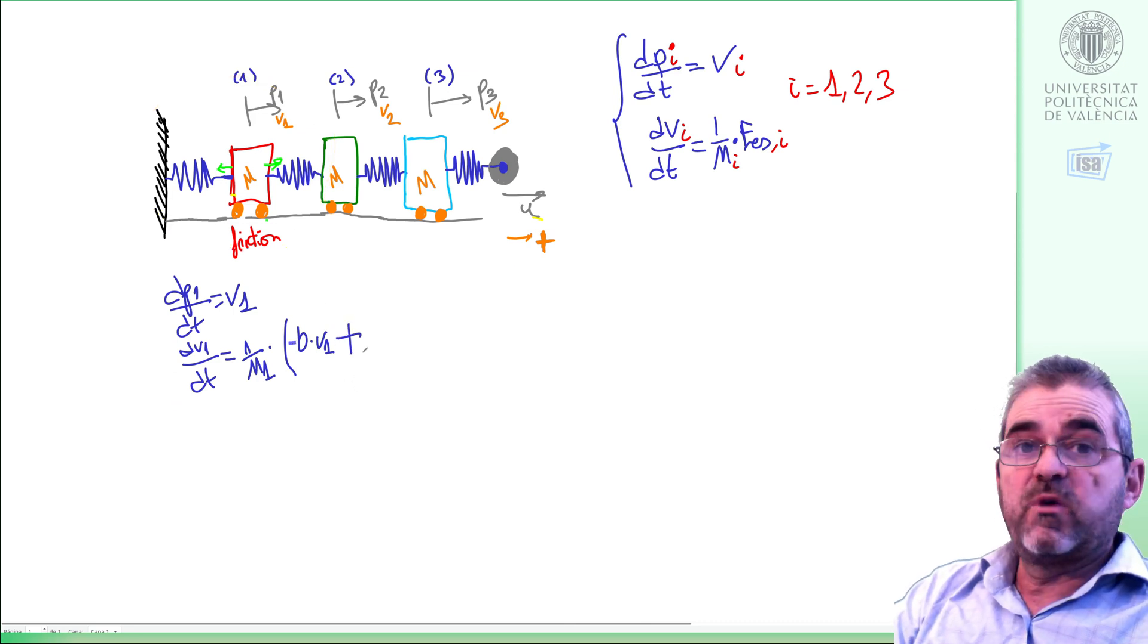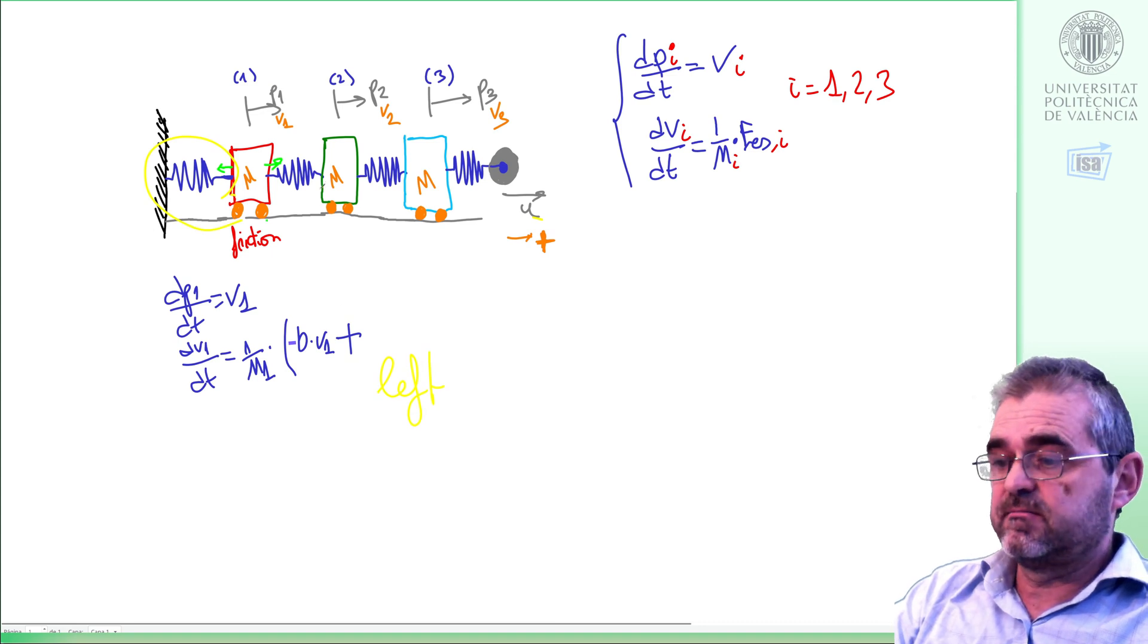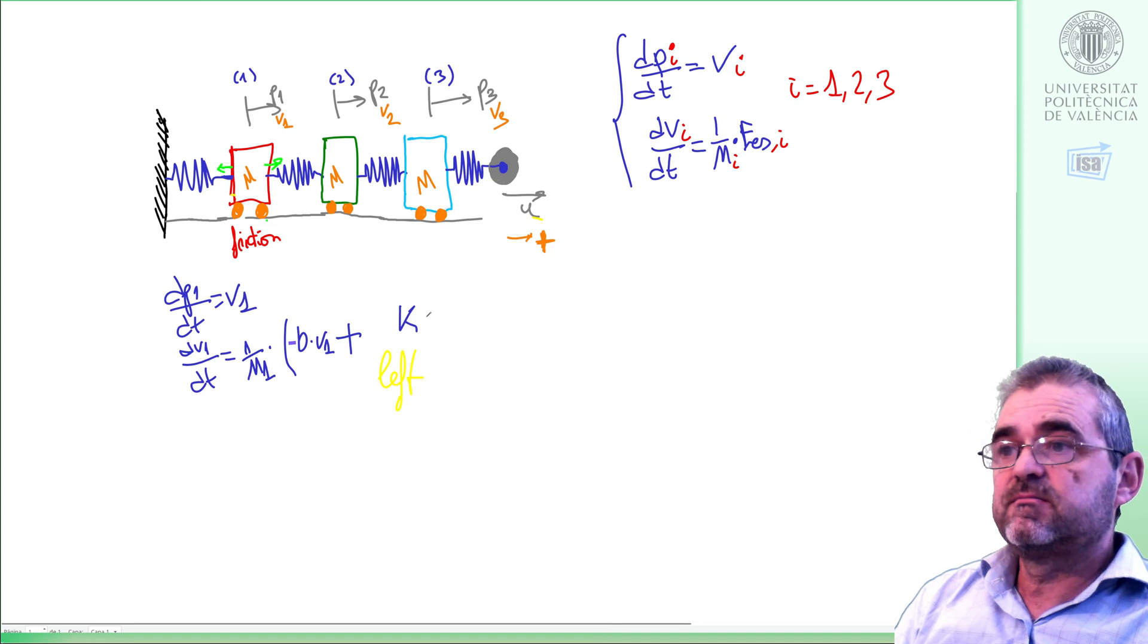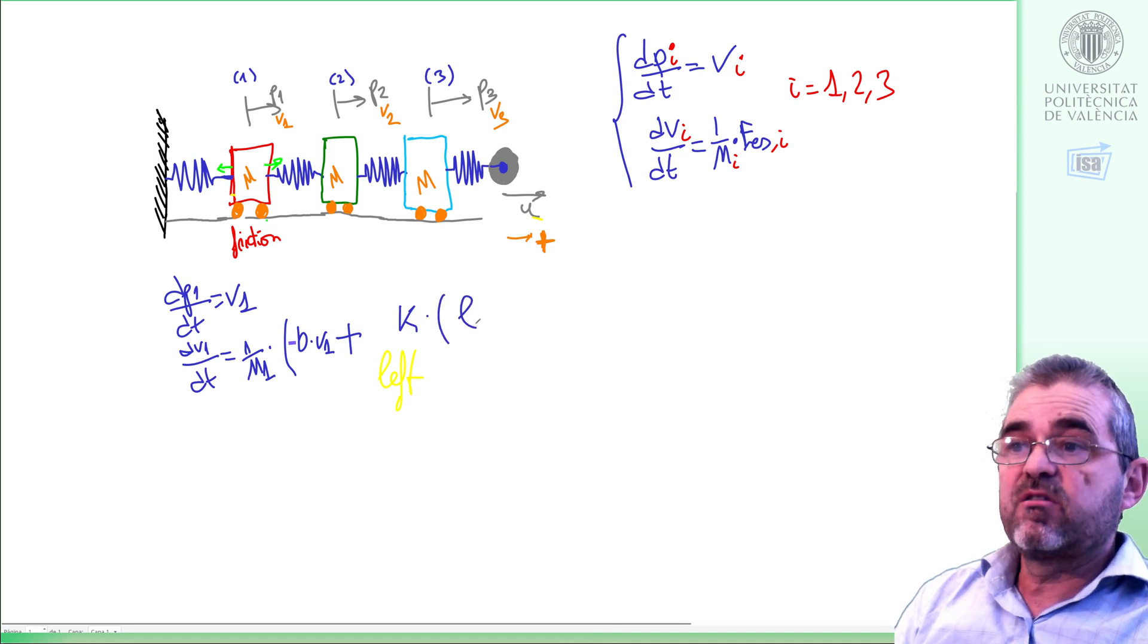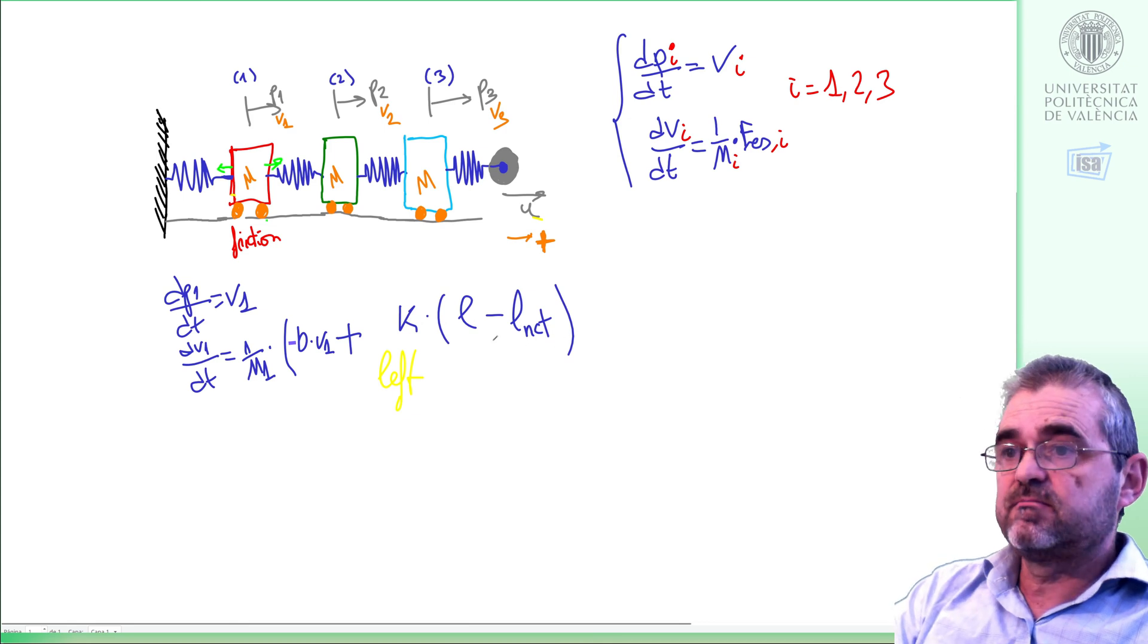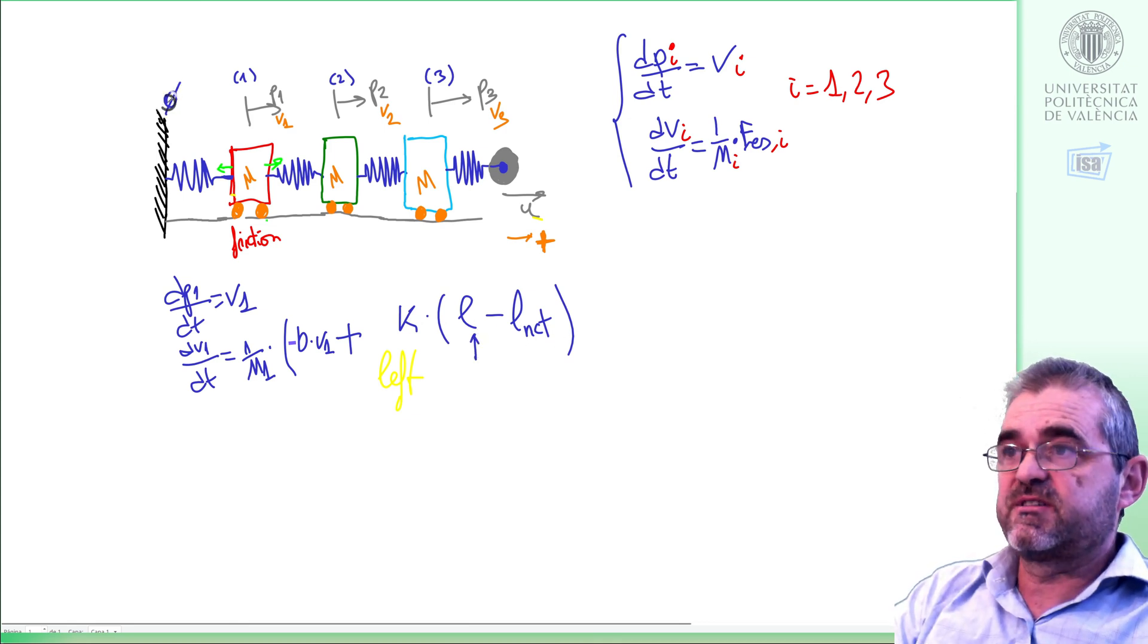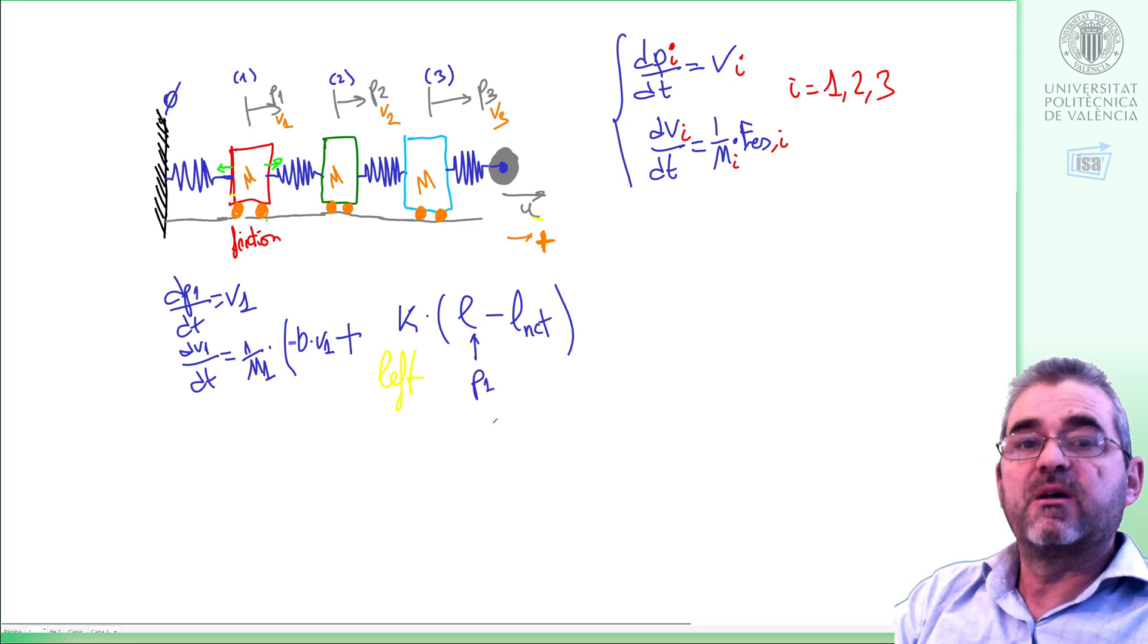And then we have the force of the left spring, that will be the spring constant K times the length of the spring minus its natural length. And the length of the spring, if this were 0, the length of the spring will be P1 minus 0. So this will be P1.